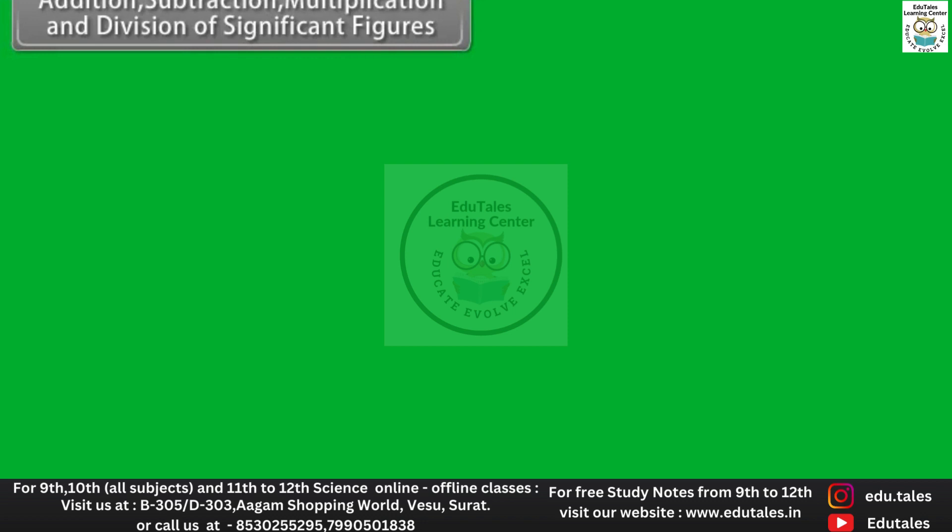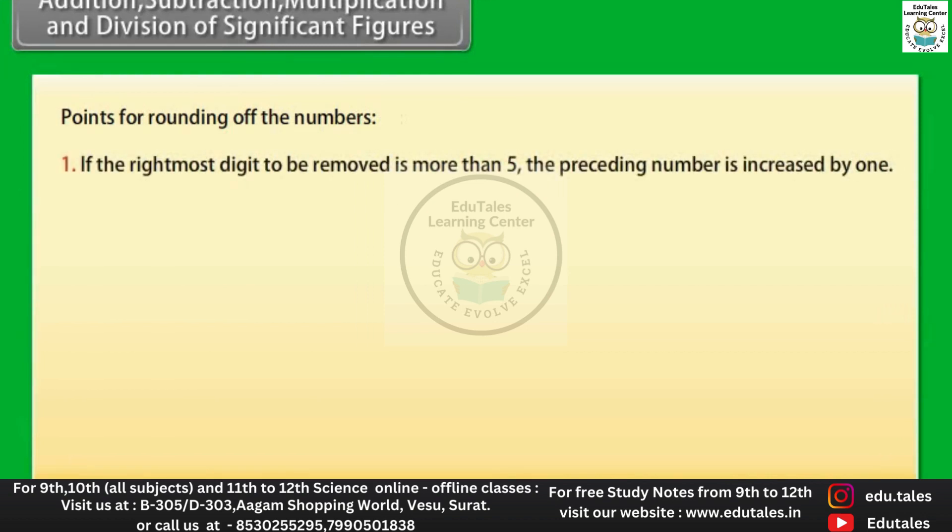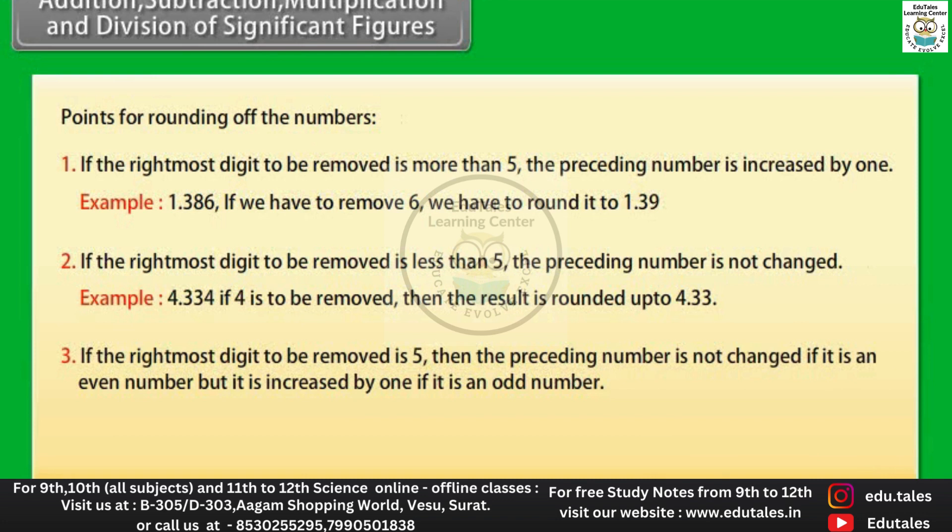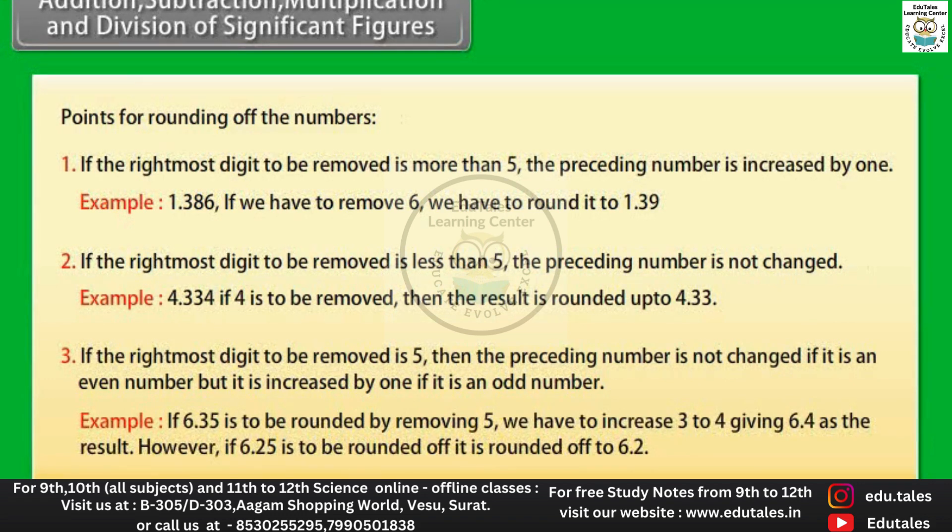Points for rounding off the numbers: If the rightmost digit to be removed is more than 5, the preceding number is increased by 1. Example: 1.386 if we have to remove 6, we have to round it to 1.39. If the rightmost digit to be removed is less than 5, the preceding number is not changed. Example: 4.334 if 4 is to be removed, then the result is rounded up to 4.33. If the rightmost digit to be removed is 5, then the preceding number is not changed if it is an even number, but it is increased by 1 if it is an odd number. Example: if 6.35 is to be rounded by removing 5, we have to increase 3 to 4, giving 6.4 as the result. However, if 6.25 is to be rounded off, it is rounded off to 6.2.